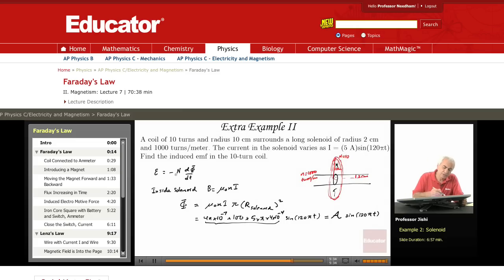This is the magnetic flux through one turn of the coil. Now, we have N = 10 turns, so the induced EMF is minus N times the derivative of this.